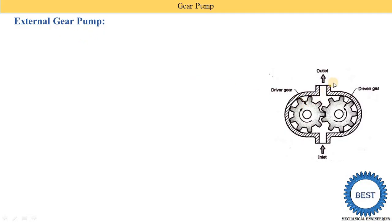Here in the diagram, you can see the casing portion, and inside the casing there are two spur gears. One is the driver gear and another is the driven gear. The driver gear is connected to a prime mover such as an electric motor, IC engine, or hand power. When the driver gear rotates, it also rotates the driven gear. There is an inlet and an outlet for the liquid or oil.